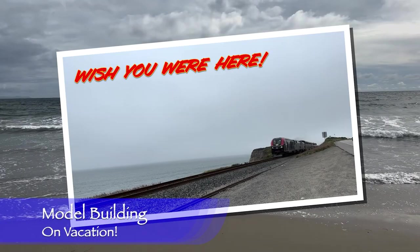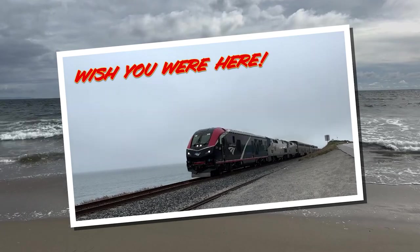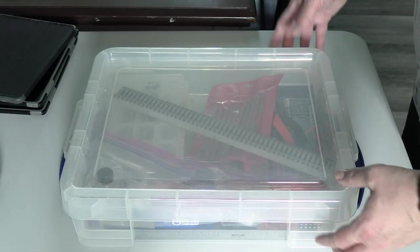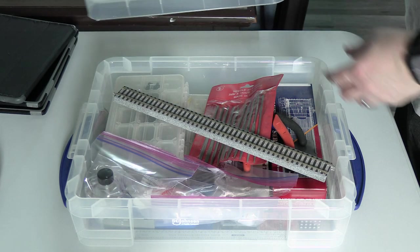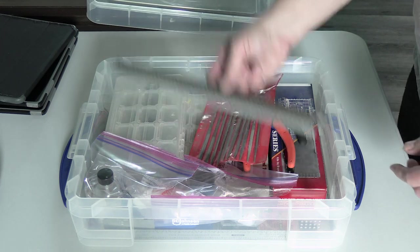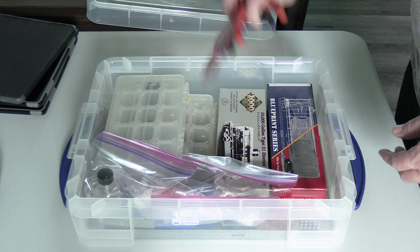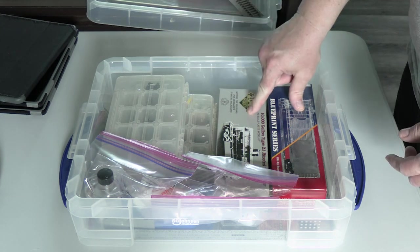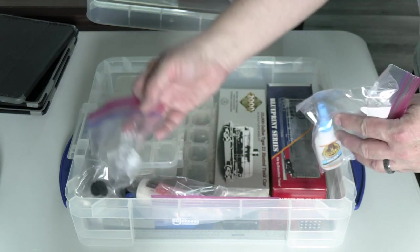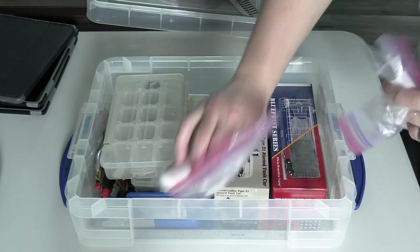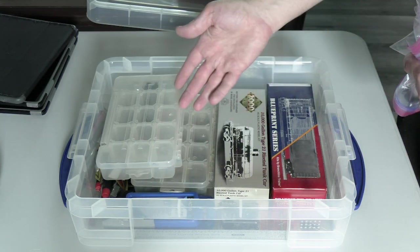Hi, I'm Dan Cordopassi. Welcome to Model Building on Vacation. All of my train stuff is in this one box. Inside I've got some track, tools, two freight car kits, some glue, and a few supplies.